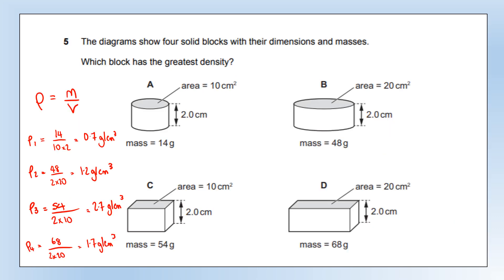The diagrams show four solid blocks with their dimensions and masses. Which block has the greatest density? Density is mass divided by volume. I've calculated the density of each block in grams per centimetre cubed — as long as they're all in the same unit, it doesn't matter which. You can see that density three, which corresponds to C, is the largest. So that's how we select our answer.